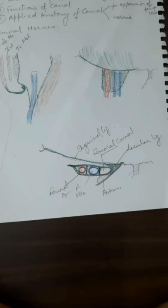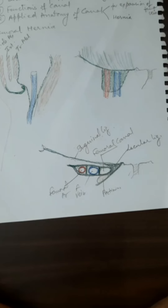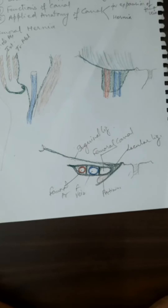Regarding the function of the canal: the femoral canal provides a space which may be utilized by the dilated femoral vein. If the femoral vein gets dilated due to improper venous return, it can push itself toward the femoral canal and accommodate itself there. Secondly, this is the passage through which lymphatics connecting the deep inguinal group to the external iliac group of lymph nodes pass. This completes the short note on femoral sheath, femoral canal, and femoral hernia.